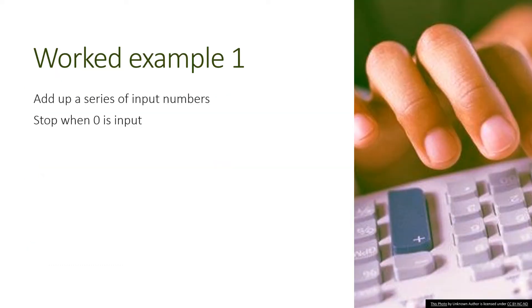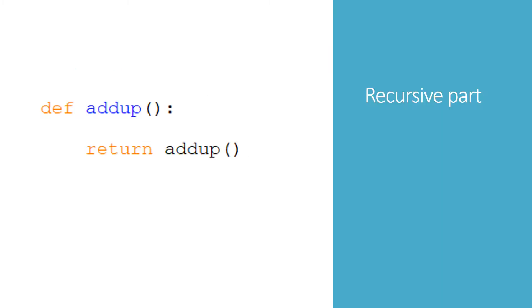Let's create a recursive function which adds up a series of numbers input by the user, and it will stop if the user types the number zero. The first item on the checklist is to create the recursive part of the function. We've got to give the function a suitable name — it's going to add up a total so I'm going to call it add_up.